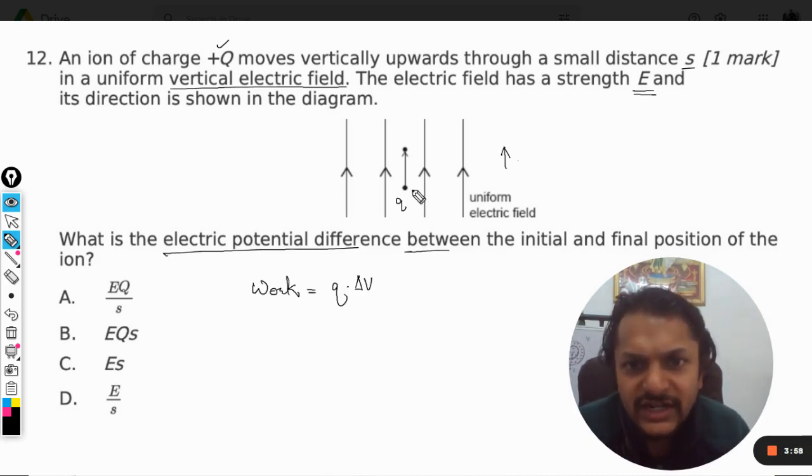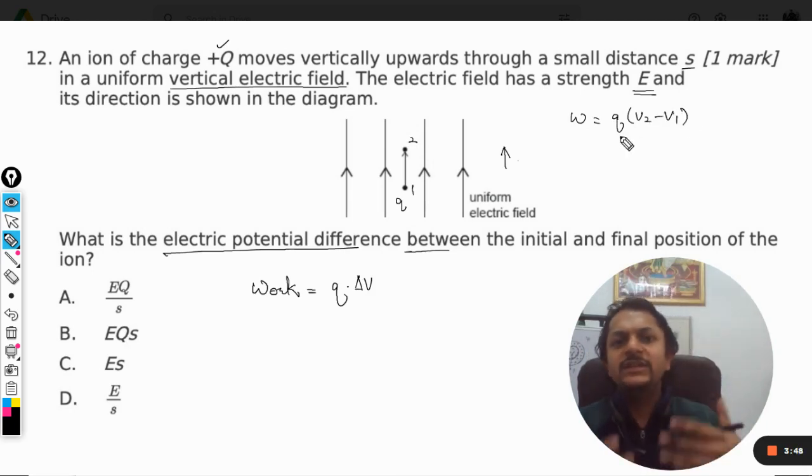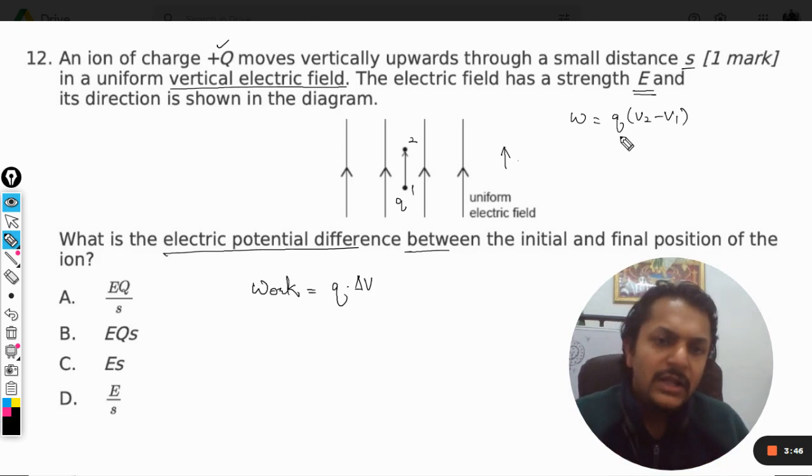So when Q is the charge and it is moving from point number one to point number two, I can always say that the work done will be final potential minus initial potential. This will be the work done.